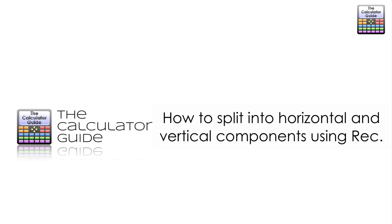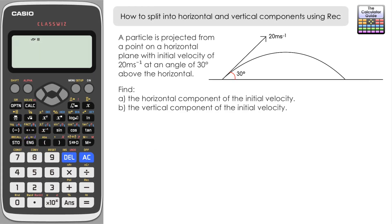Hello and welcome to the Calculator Guy video on how to split into horizontal and vertical components using the rectangular coordinates feature. We're going to be splitting a velocity and two examples with splitting a force into horizontal and vertical components using the rectangular coordinate feature. I'm doing this on a Casio Classwiz fx-991EX, although it is possible to do this on any calculator that has the REC feature.